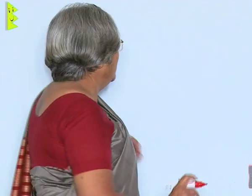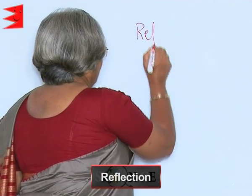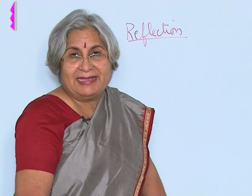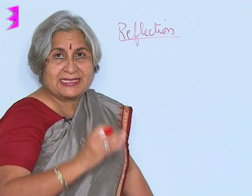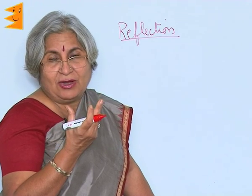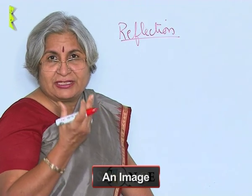Why do we use a mirror? Of course, because we can see our image — it becomes easy to see how our hair is going. But what is this looking into a mirror called, and how does it help? That is what we are going to study now, and this is called reflection. When light falls on a mirror, we find there is a same kind of thing in the mirror, and this is called an image.